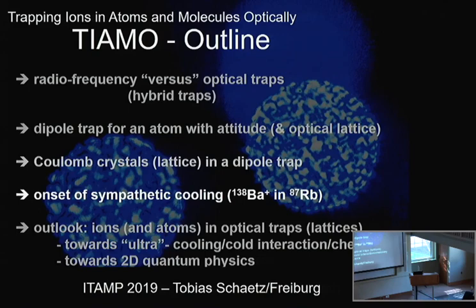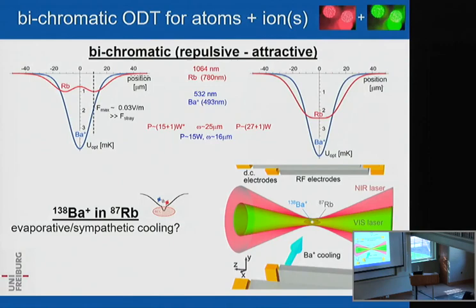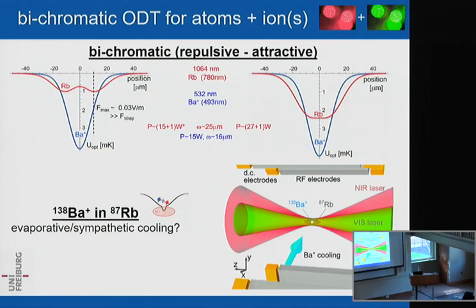Now, the onset of sympathetic cooling. On paper it looks simple: you choose a bichromatic trap — one laser providing confinement for the barium line, a second laser also confining barium but providing anti-confinement for rubidium, because rubidium is resonant at 780 nm so a 532 nm beam is blue-detuned for rubidium. This gives individual control: increasing the infrared laser responsible for rubidium confinement allows you to bring the rubidium into overlap with the barium or reduce the density of rubidium in the center of the trap. Beam waists of the order of 16–25 µm depending on wavelength are used.